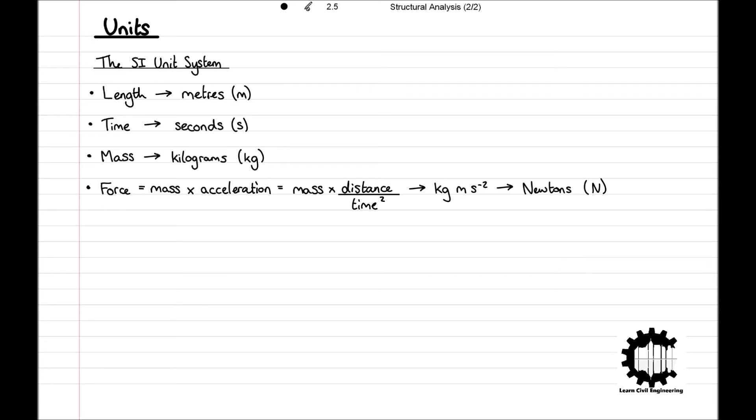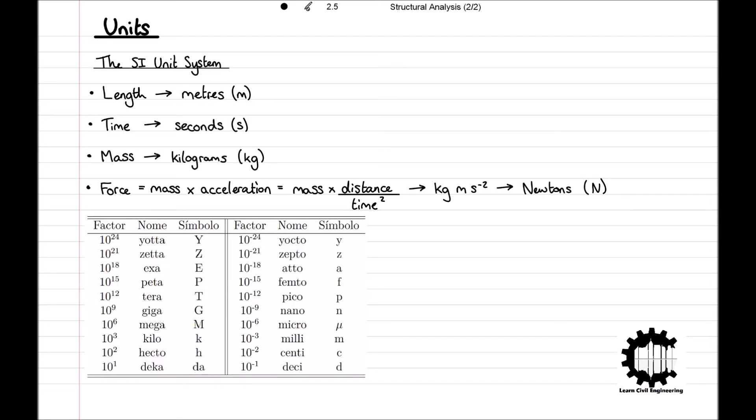This unit system specifically allows for simple conversion between different units, for example from meters to centimeters. Excluding time and angle units, all unit conversions are based on a decimal system, and so to convert between these units you simply have to multiply or divide by 10 a certain number of times. These factors can be seen in the table here and are readily available online.